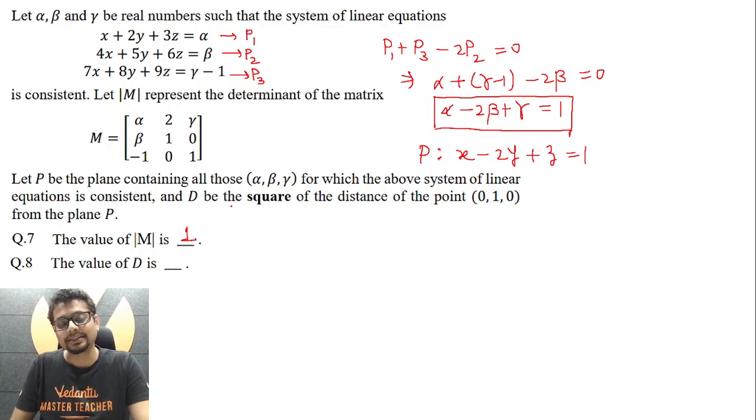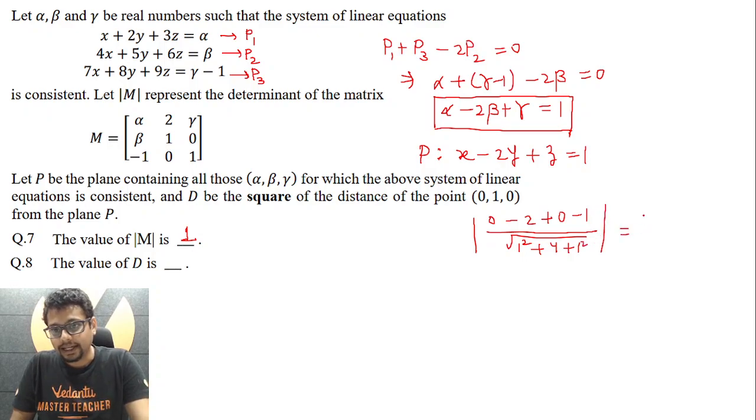And this capital D is supposed to be the square of the distance of this point 0 comma 1 comma 0 from this plane P. And that's what we have to answer in question 8. So it's very simple, you put x to be 0, y to be 1, z to be 0. And this one you'll take on left hand side as minus 1, divide by, you have under root coefficient of x square plus coefficient of y square plus coefficient of z square.